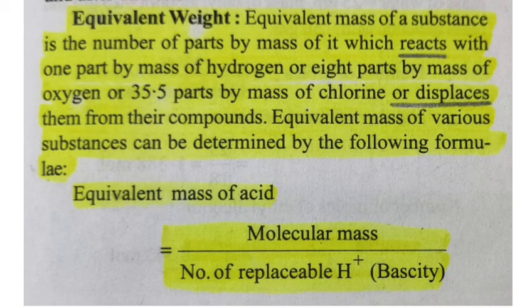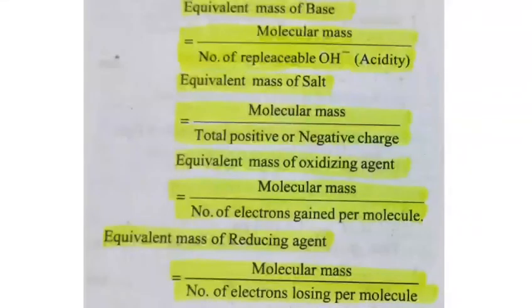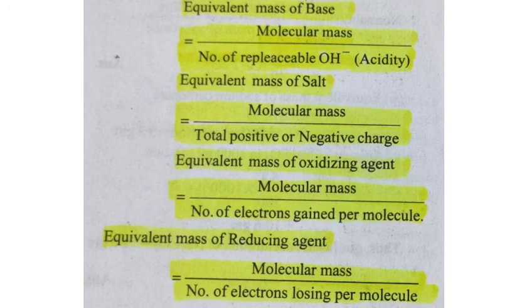Let's start with the formulas. The equivalent mass of an acid is equal to molecular mass divided by the number of replaceable H⁺ ions. Next, the equivalent mass of a base is equal to molecular mass divided by the number of replaceable OH⁻ ions. So in the acid case you count H⁺ ions, and for base you count OH⁻ ions.